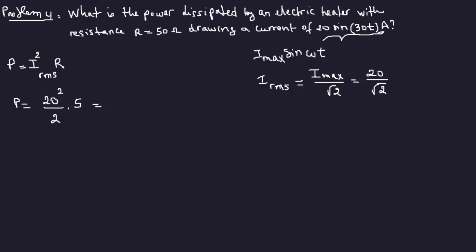And that's 10,000. Let's see, 20 squared times, divided by 2, 50, R is 50. So that should be, yeah, so that's 10,000 watts. And that's it.